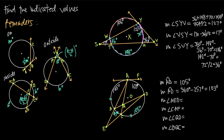Now finding the measure of angle AED. The vertex of this angle is outside the circle. I take the larger inscribed arc minus the smaller inscribed arc and divide by 2. That gives 203 minus 47 equals 56, divided by 2 equals 28 degrees. So the measure of angle AED is 28 degrees.